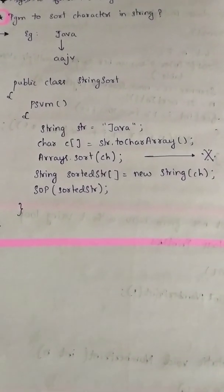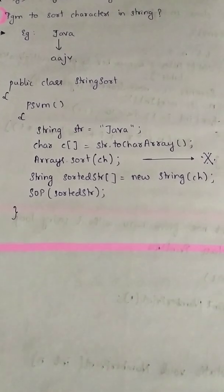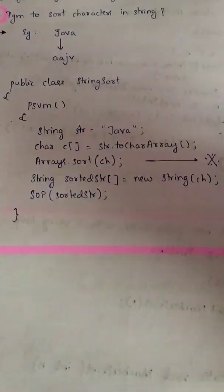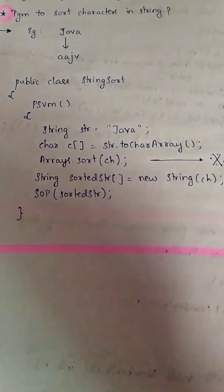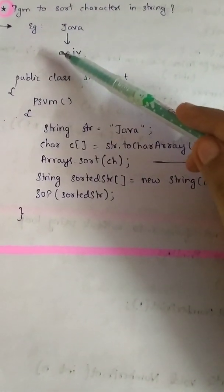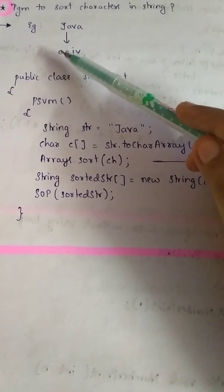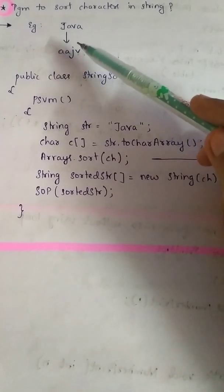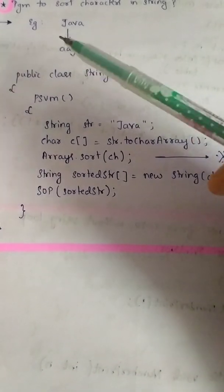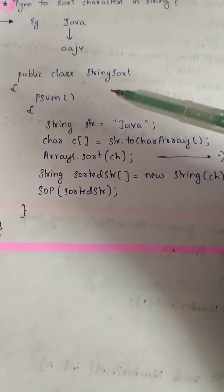Hi friends, here is a Java program which is used to sort the characters present in a string. If we have an example as Java, after you sort it, it will become arranged according to alphabetical order: A, A, J, and V. How do you do it in programming? It's really very simple.